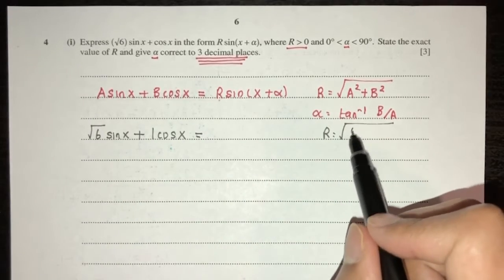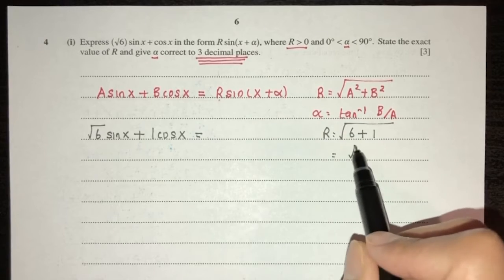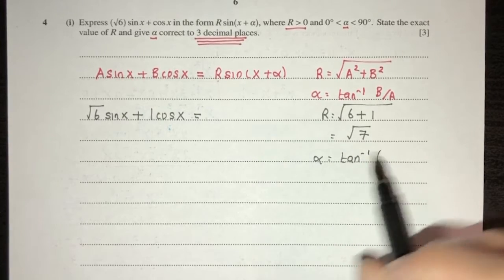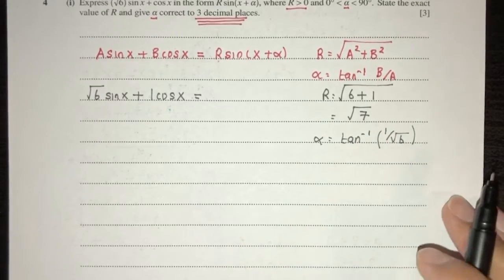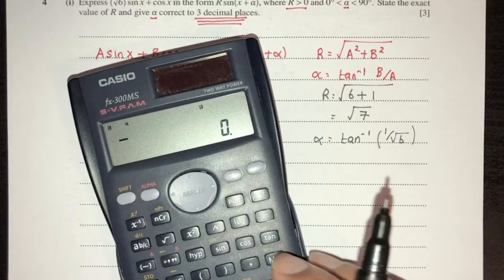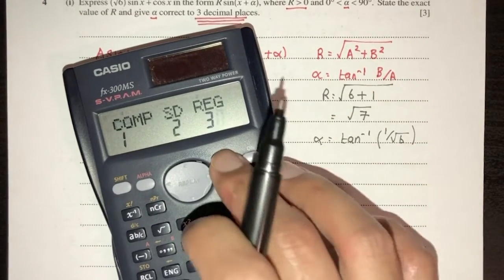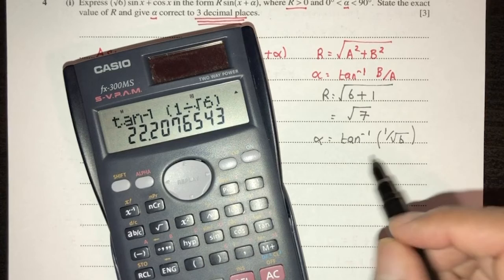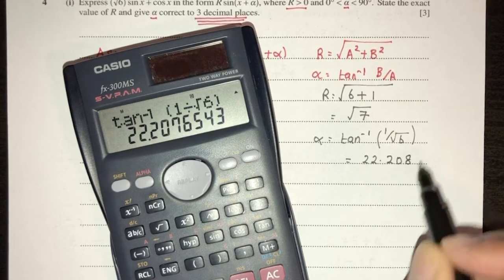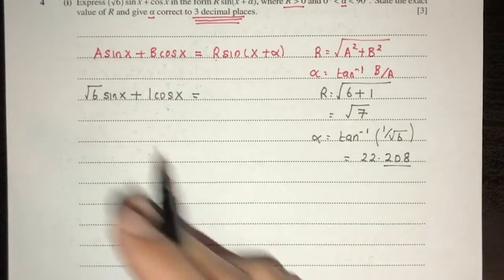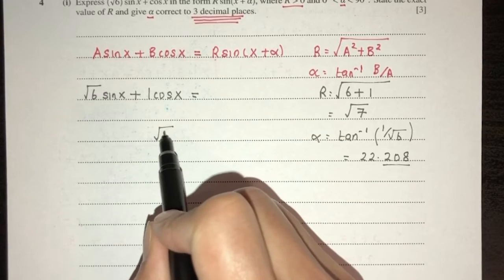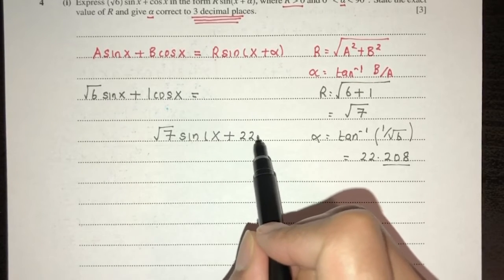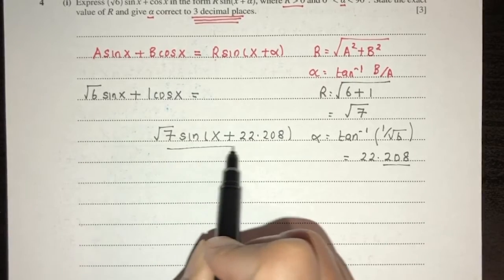With a = √6 and b = 1: R = √(6 + 1) = √7 exactly. Alpha = tan inverse(1/√6) = 22.208 degrees correct to 3 decimal places. So the expression becomes √7·sin(x + 22.208). This formula for combining a·sin(x) + b·cos(x) must be known by heart as it is not on the formula sheet.